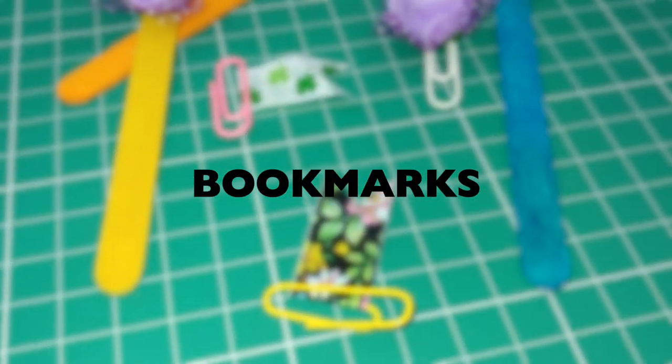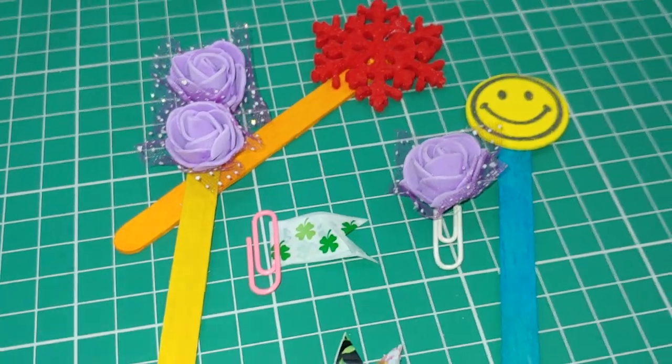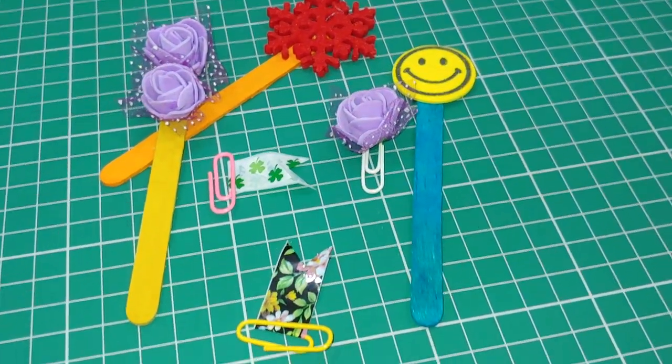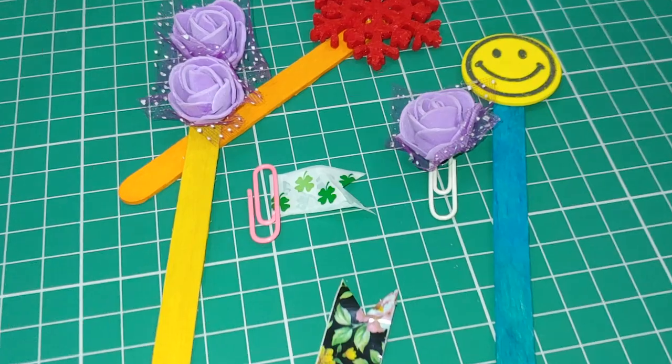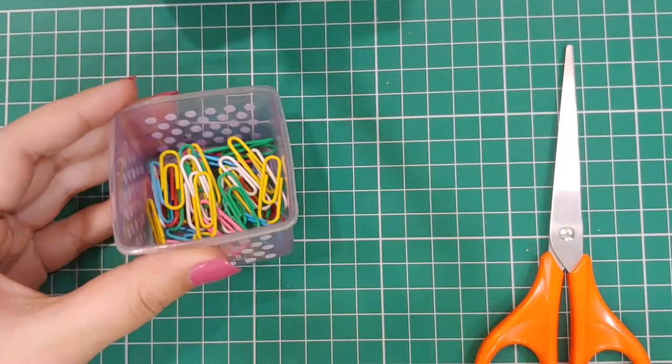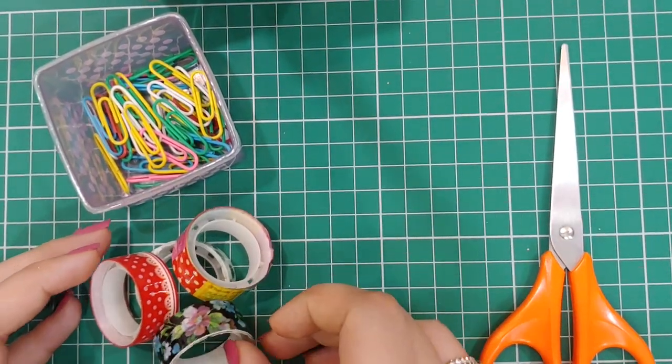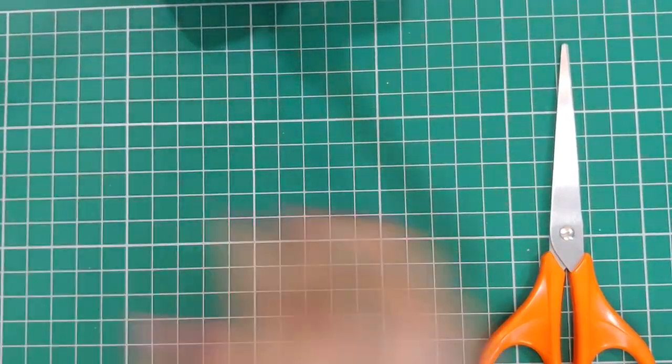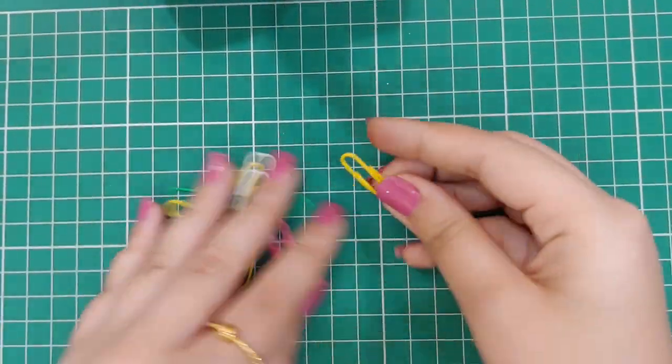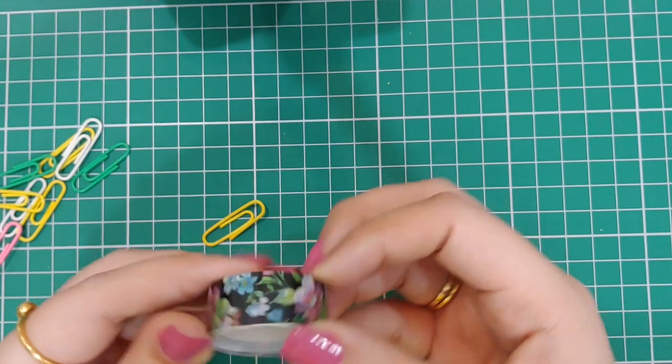All you need for the first one is a pair of scissors, some paper clips, and washi tapes of your choice. Now take a paper clip of your choice and take a washi tape of your choice and cut out a long rectangular piece of washi tape.